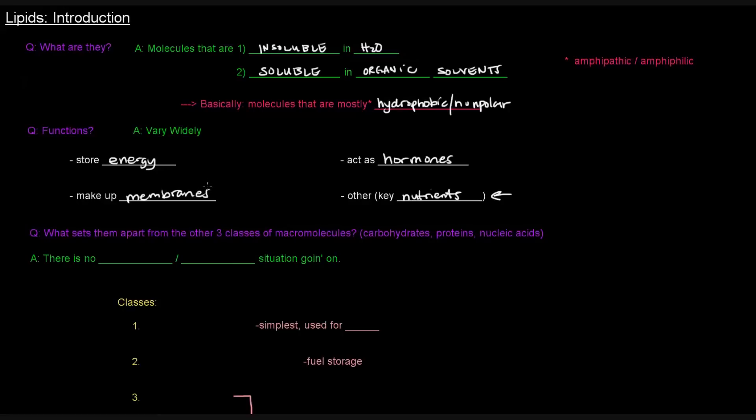Okay, so now, the question is, we know that lipids are one of the four classes of macromolecules. The other three being carbohydrates, proteins, and nucleic acids. But what sets them apart from those other three classes?